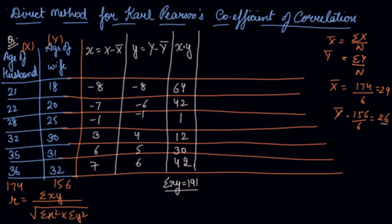Now we have to find out summation x square. We will take the square of the x series. 8 times 8 is 64, 7 times 7 is 49, then 1, 9, 36, and 49. So we get summation x square as 208.